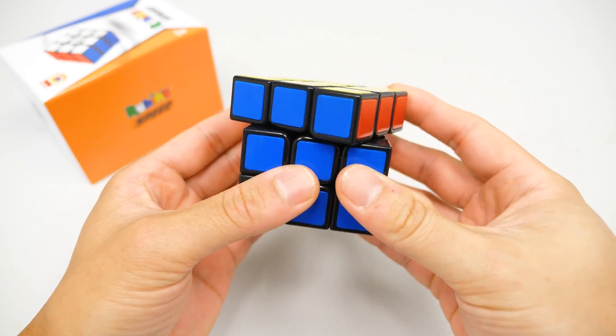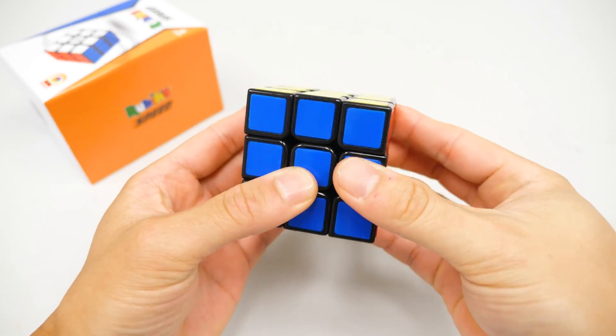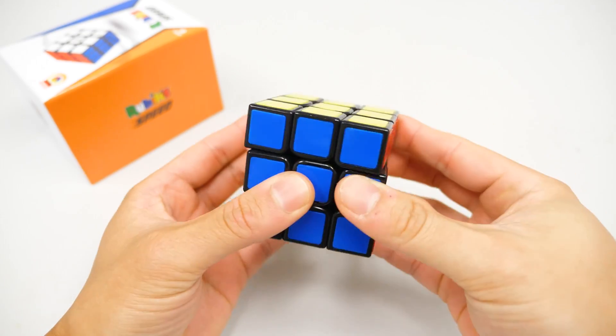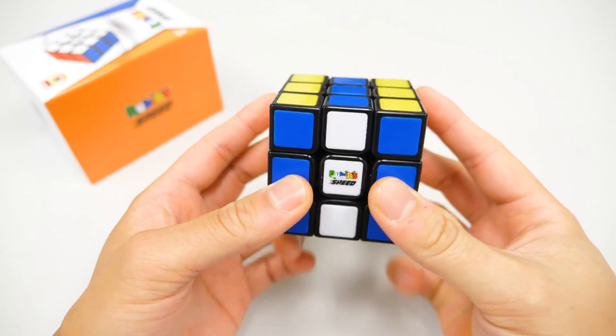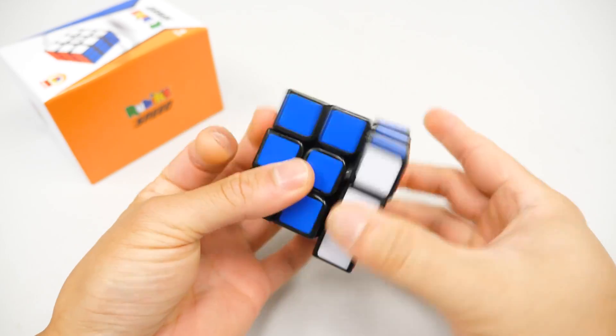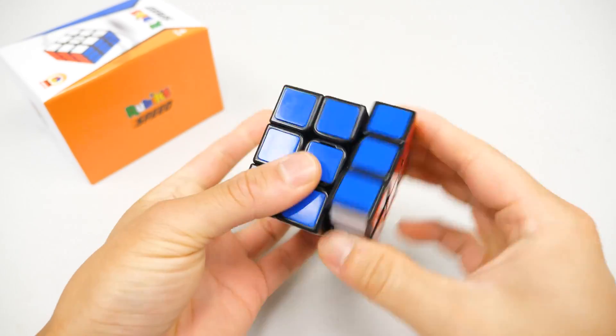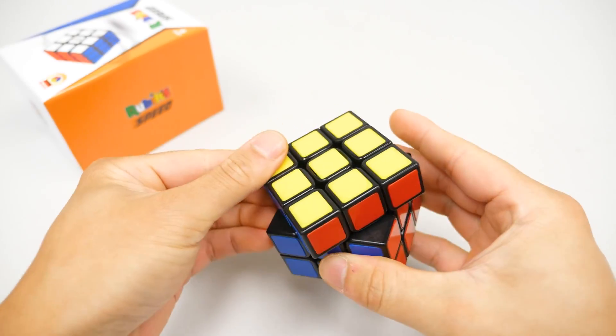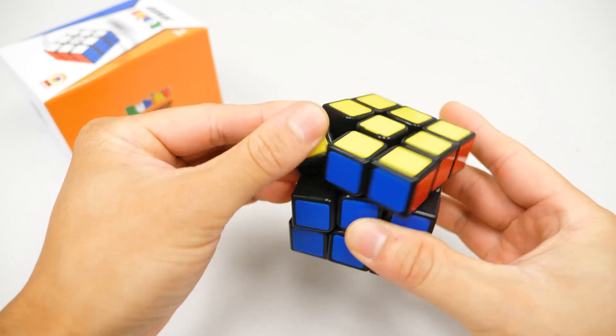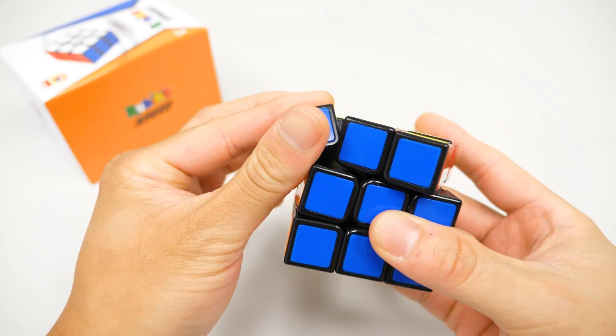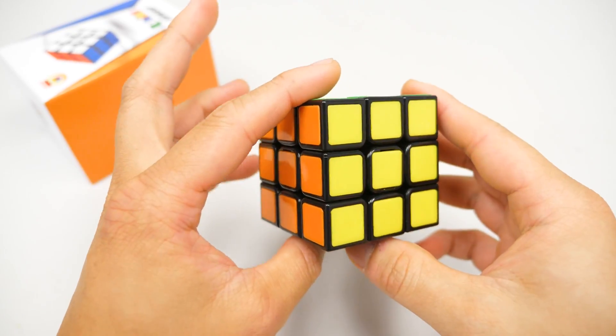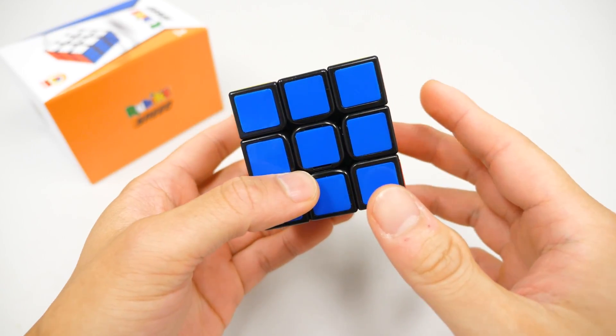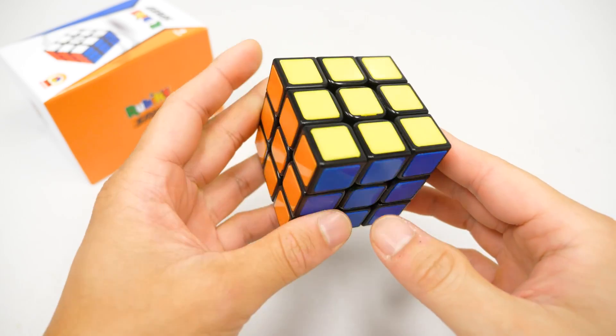Alright, so corner cutting is pretty decent. Forward cutting is pretty good, and reverse, kind of a struggle at strong angles, but it's there. M slices are extremely light, and the magnet strength is medium. I don't think accidental corner twisting is very likely. I can twist it by hand, but I don't think it happens during solves, and I don't think this cube will pop very much either. And even though this cube weighs 100 grams, it doesn't feel like that because it turns so easily.